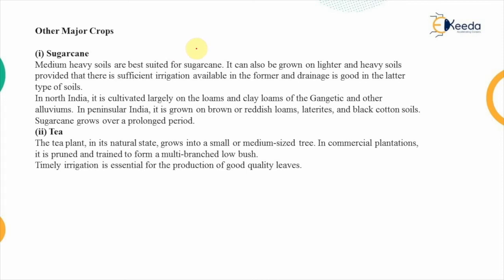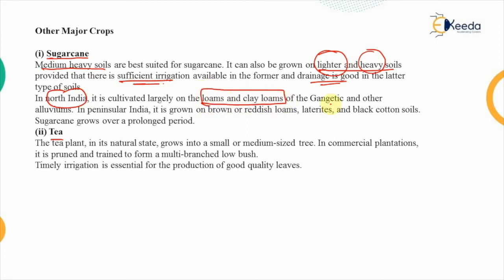Certain crops overlap both seasons and are grown throughout the year, such as sugarcane and tea. For sugarcane, medium to heavy soils are best suited, though it can be grown on lighter soils with sufficient irrigation and on heavy soils with good drainage. In northern India, sugarcane is largely cultivated on loams or clay loams of the Gangetic plains — soils deposited by river flow.